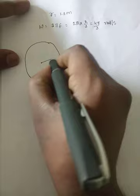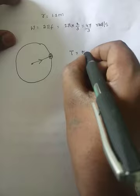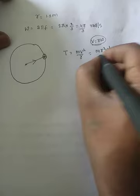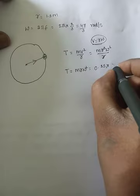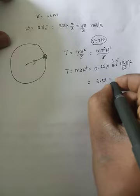The stone of mass m is making rotations. The tension in the string equals centripetal force: T = m·v²/r. Since v = r·ω, substituting gives T = m·r²·ω²/r = m·r·ω². So tension = 0.25 × 1.5 × (4π/3)² = 6.58 newtons.